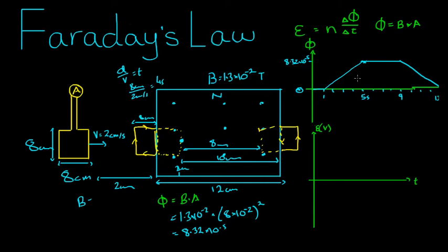Voltage is only induced when the flux is changing. Where the flux is constant, whether it's at a maximum or a minimum, we will get zero voltage. So we have zero voltage, and then all of a sudden we have some positive voltage between one second and five seconds, and then zero voltage again. Then at nine seconds, we get voltage in the opposite direction and at 13 seconds back down to zero.